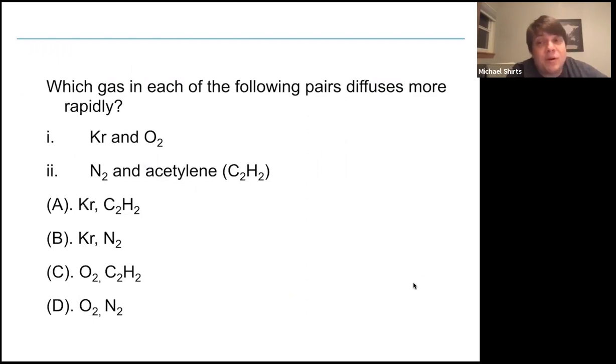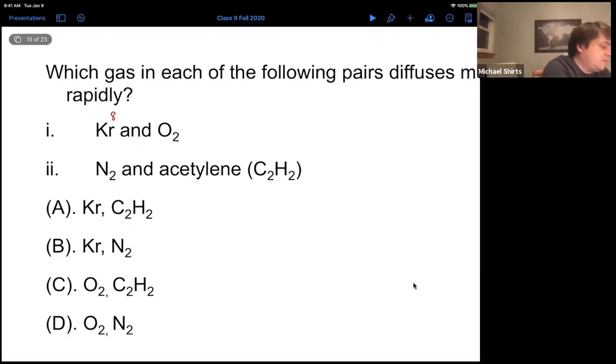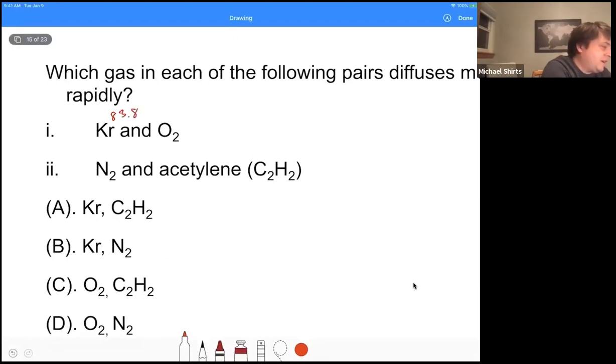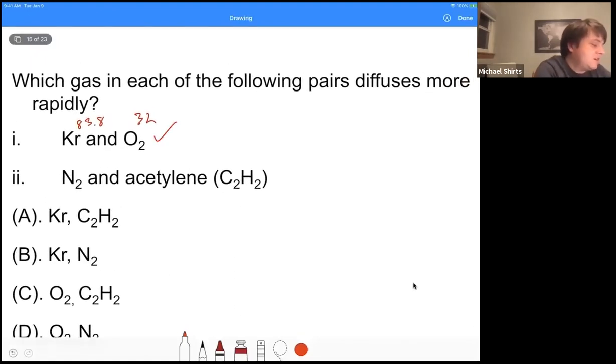Because if we know the higher molar mass, we know which one diffuses faster. So in this case, Krypton is 83.8. Oxygen is 32. So clearly, oxygen is going to diffuse more rapidly. So it's oxygen here.